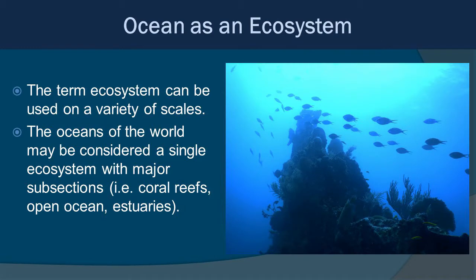The term ecosystem can be used on a variety of scales. The oceans of the world could be considered a single ecosystem, or you can look at various subsections such as coral reefs, open oceans, and estuaries. It all depends on what you're looking into, but most habitats are not isolated systems — there is intermixing between them.